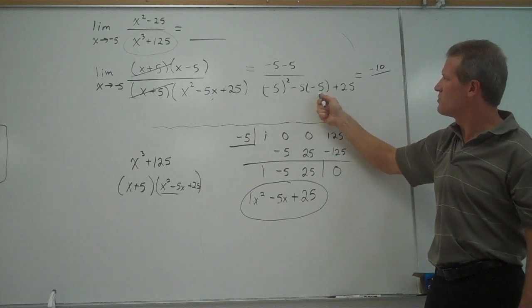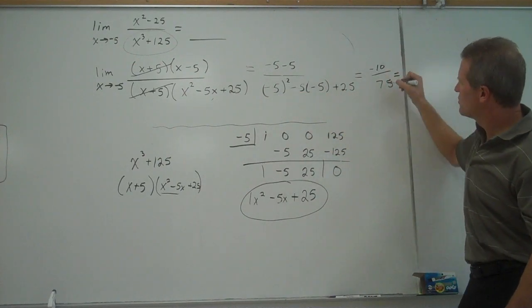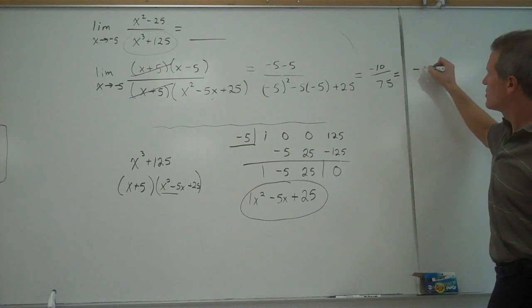In the denominator, I'll get 25 plus 25 plus 75, which is 75, reduce, divide both by 5. My answer is going to be negative 2 over 15.